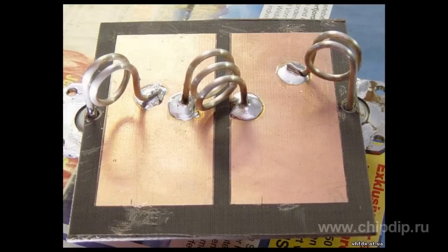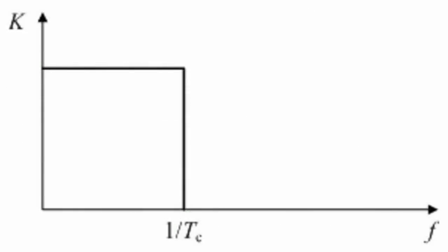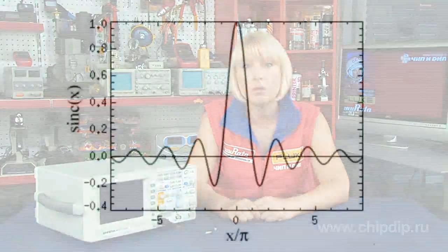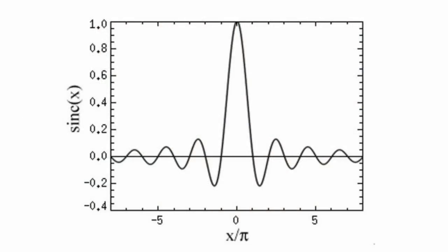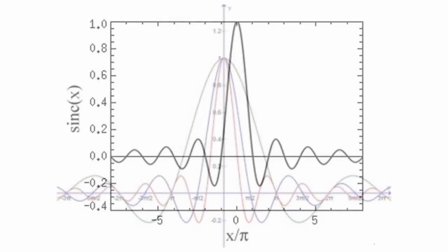An ideal low-pass filter completely suppresses all the frequencies of the input signal above the cut-off frequency and transmits unchanged all the frequencies below the cut-off frequency. It can be realized only in theory by multiplying the input signal by a rectangular function in the frequency domain, or by a convolution of the signal in the time domain with the sinc function.